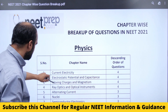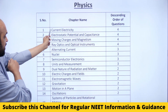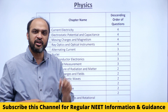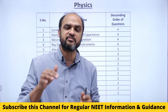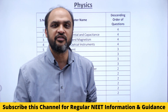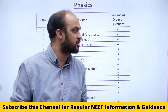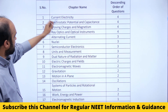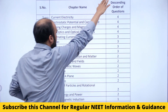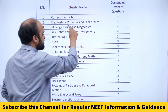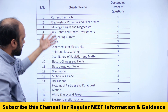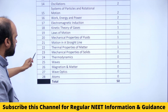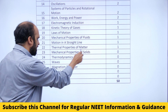This PDF is available on the NEET Prep Telegram channel — the link is given in the video description. What it shows is chapters in descending order of questions asked. Current electricity and electrostatic potential had a lot of questions, but six chapters had no questions at all.